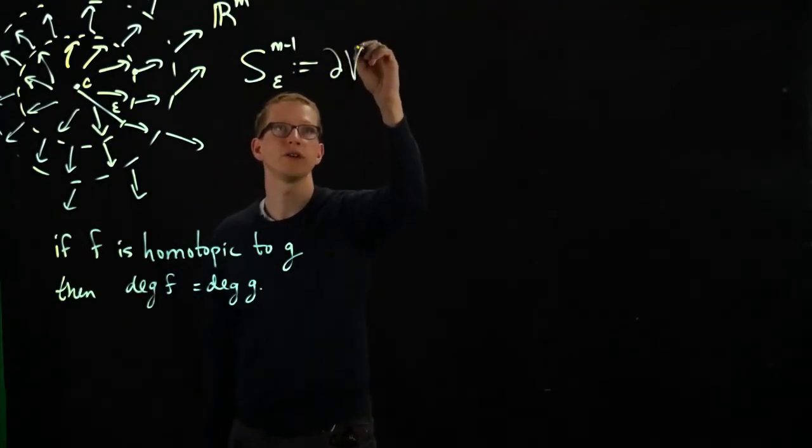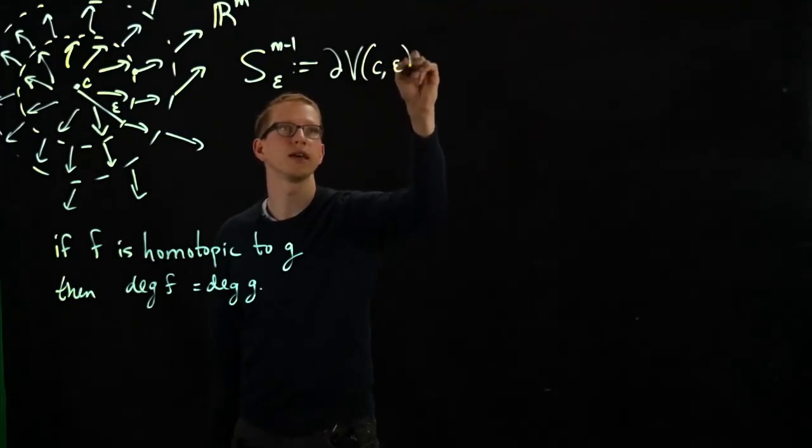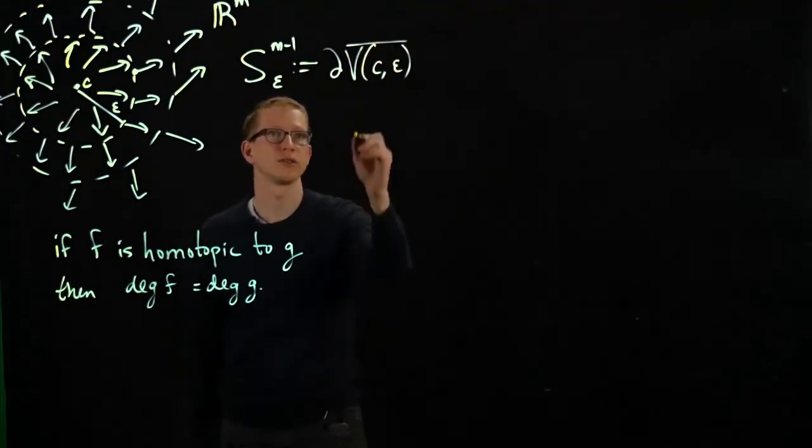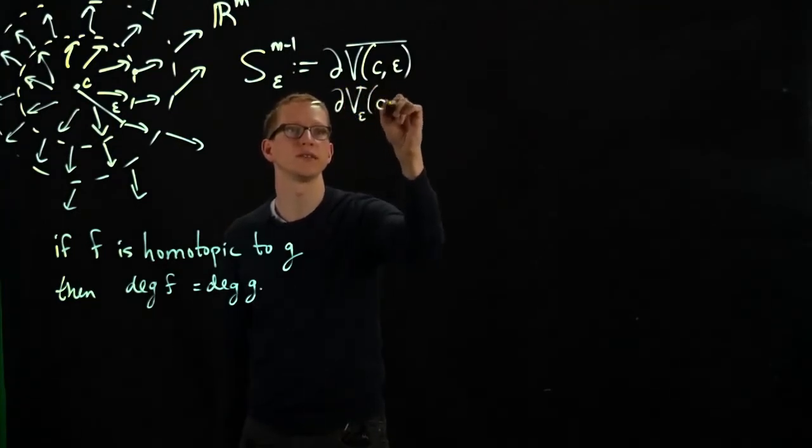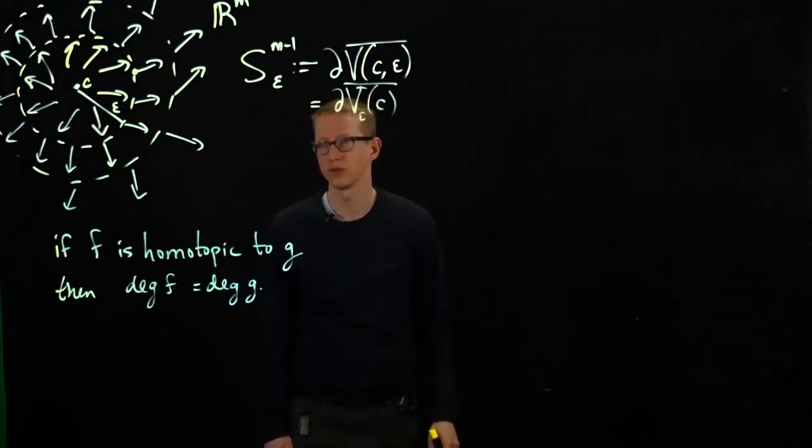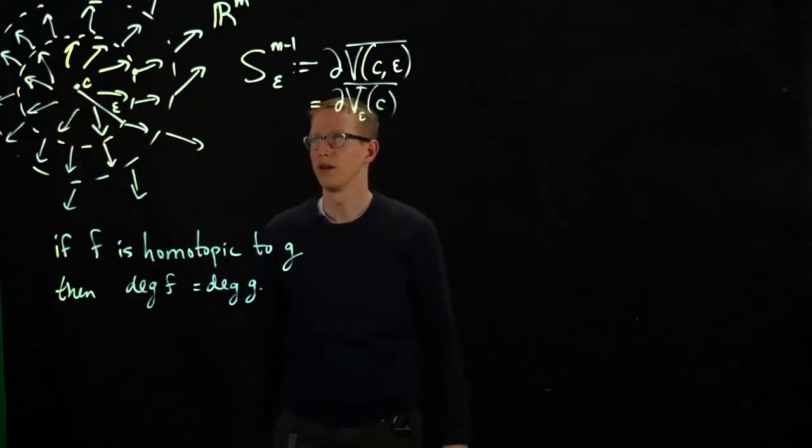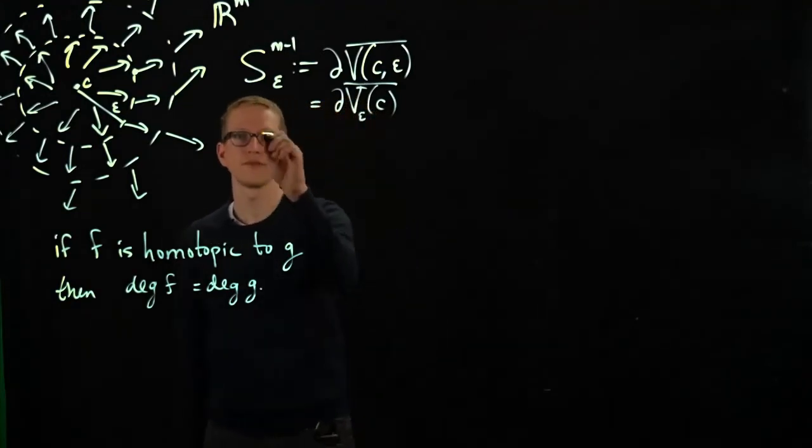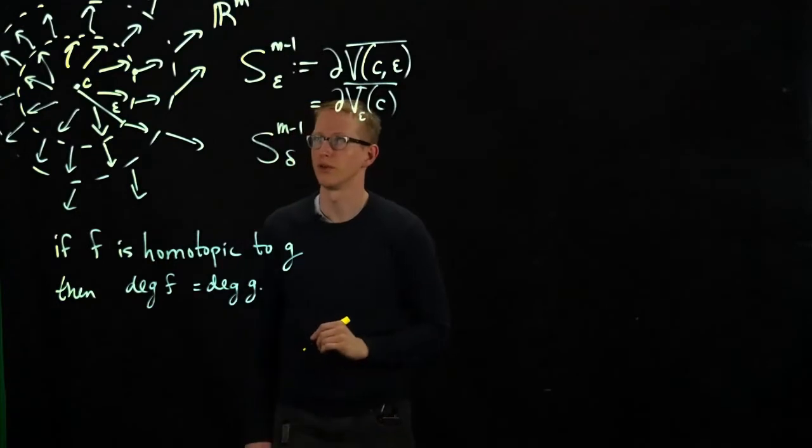And this is the boundary of the ball at the point C of radius epsilon. I guess the notation before was, this is boundary V_epsilon at C. All sorts of different kinds of notation for the same idea, the sphere of radius epsilon around that point. And we also have the sphere of radius delta around that point.